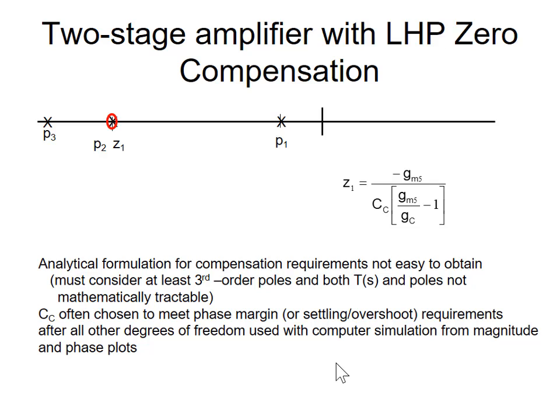Analytical formulation for compensation requirements is a little more tedious now because we don't have a closed-form expression for the third pole. To know the pole spread, we have to solve a third-order polynomial or make good approximations. But we know it's there, and we can handle it with computer simulation, so we may not need an analytical expression for where that next pole is. We can iteratively adjust CC until we get the desired performance.